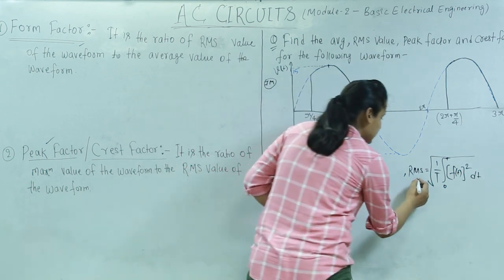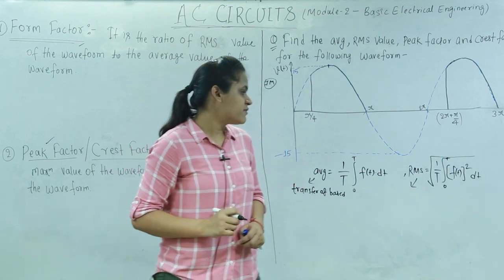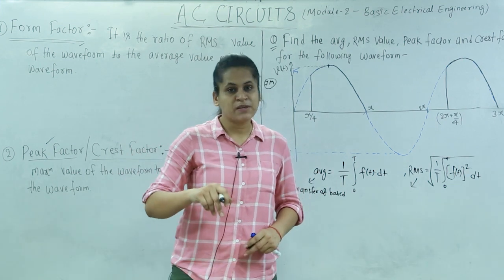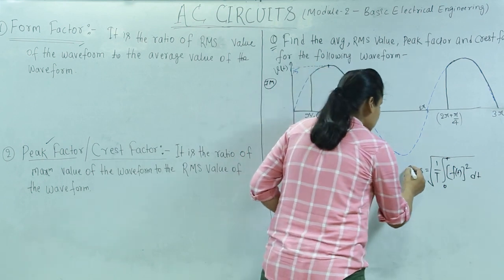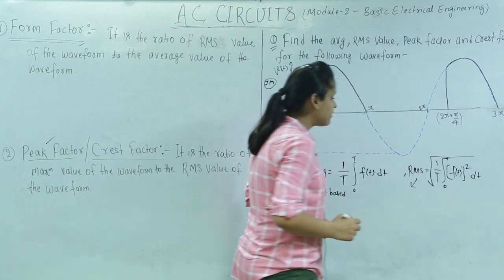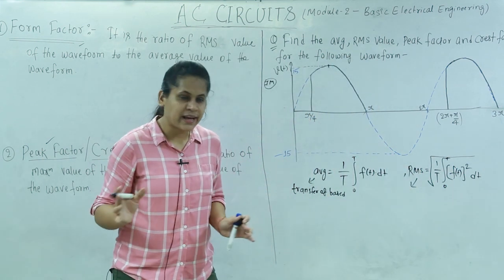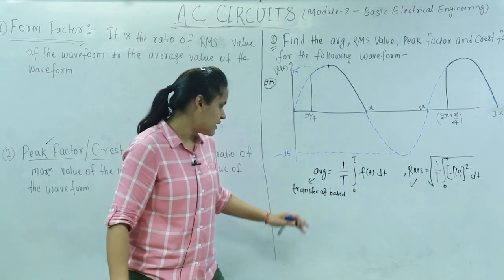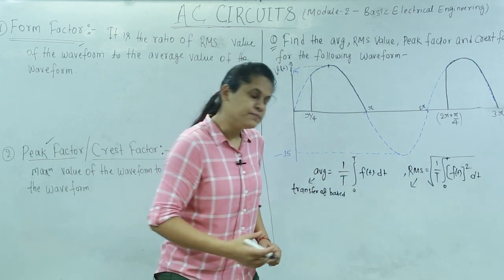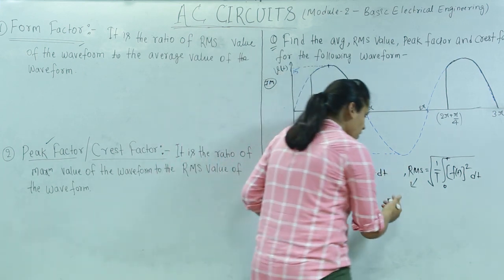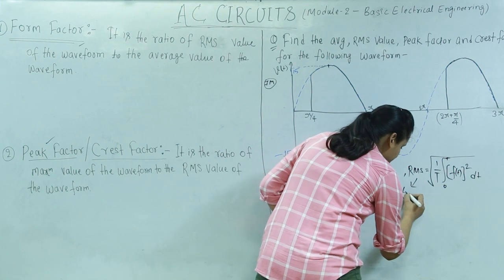You can go back to the previous lecture for the detailed definitions of average value and RMS value. I gave those definitions in very vast detail in the previous lecture. Here I am just trying to refresh. RMS value was based on transfer of charge.